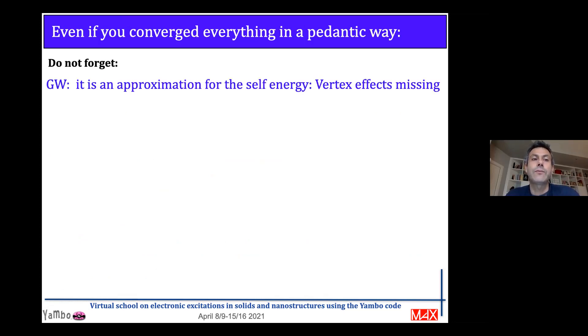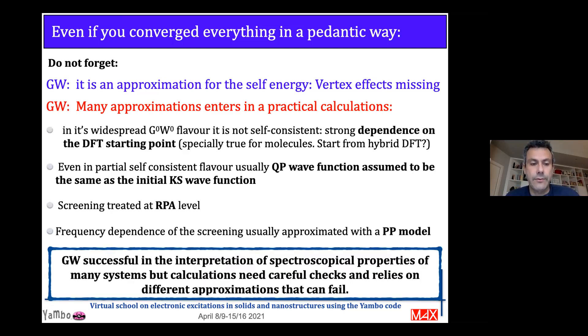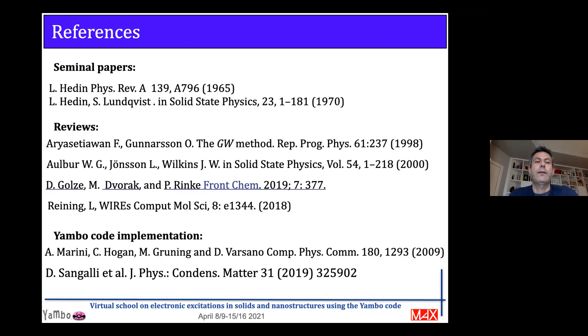Here I just put several parameters that you have to carefully check before having meaningful results. Even if you converged everything, do not forget that GW is an approximation for the self-energy. Vertex effects are being neglected. Many approximations enter in the practical calculation that I showed before. Here are summarized: plasmon pole model, RPA level for the screening. And you can observe also an important dependence from the DFT starting point you use to build your Green function and your screening. So here I conclude. I leave here some references: the seminal paper of Hedin and Lundqvist, some reviews including some recent reviews about the method. These are the two papers with the implementation in the Yambo code. And I thank you for your attention.